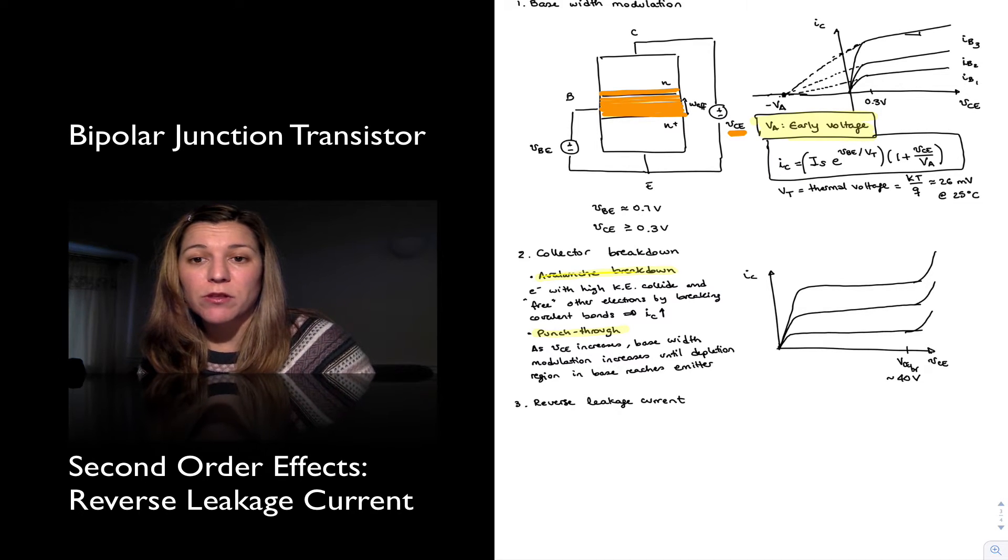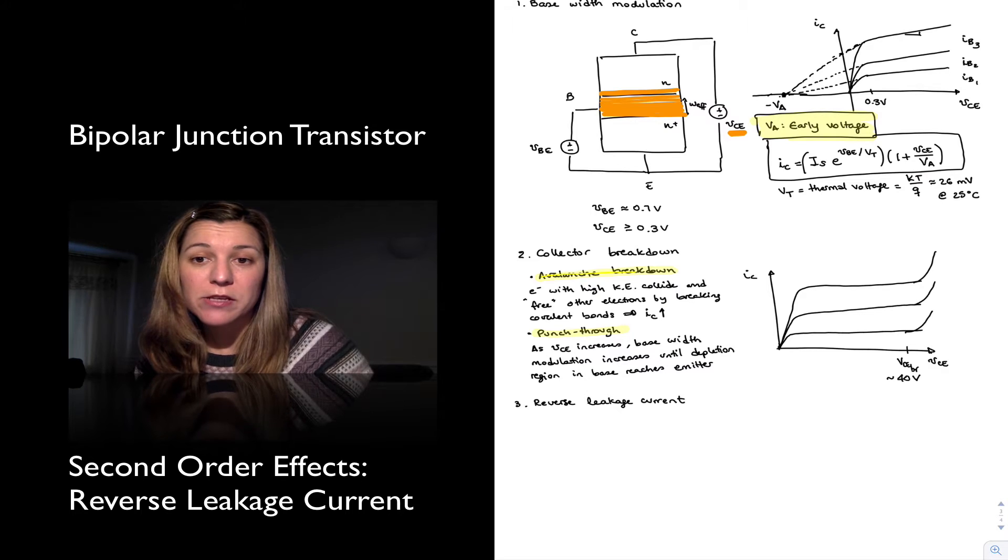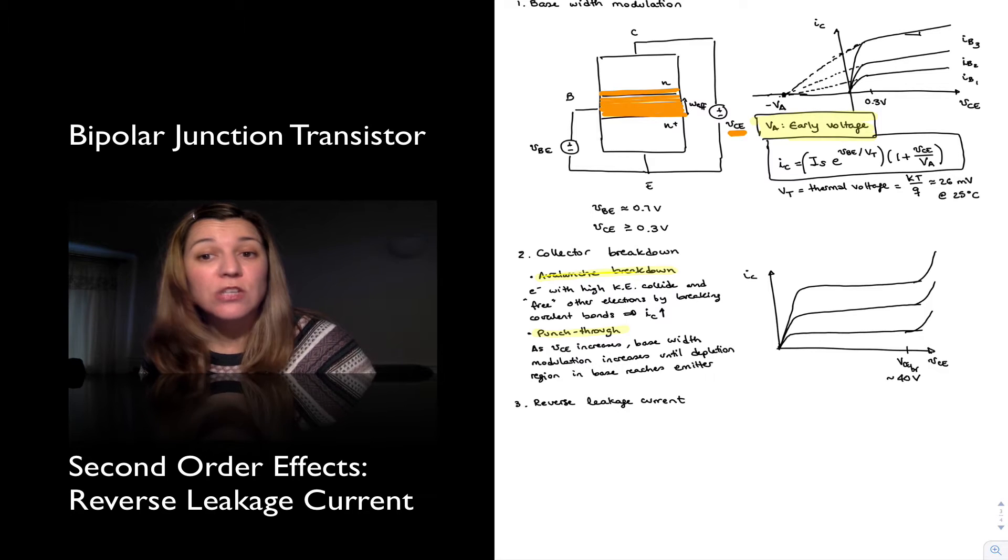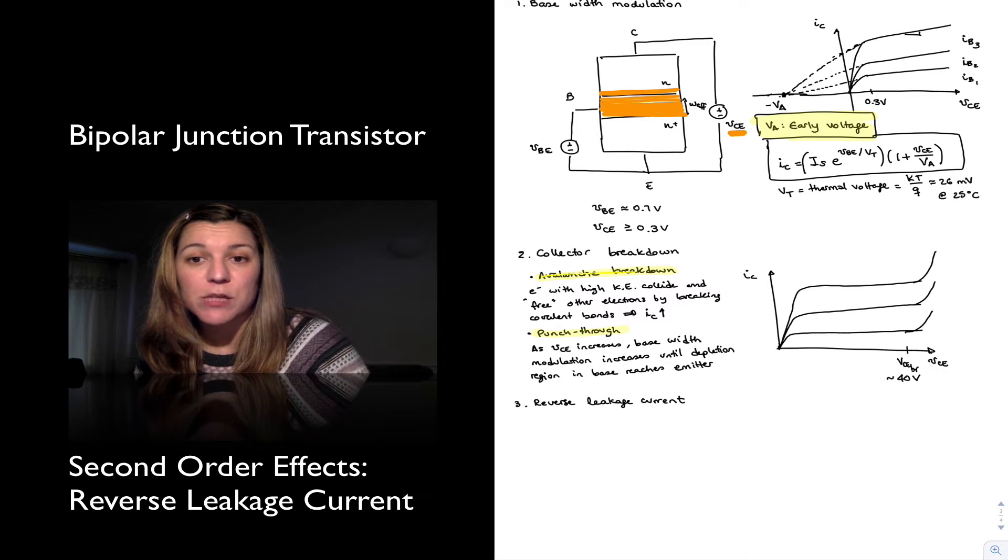In all reality, when the base-emitter junction is reverse biased, as well as the base-collector junction, there is always a small amount of reverse leakage current through a reverse biased P-N junction.